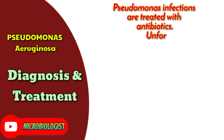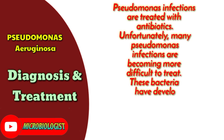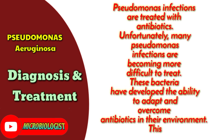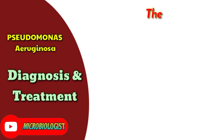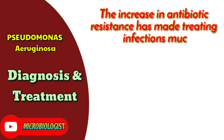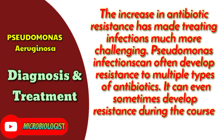How are Pseudomonas infections treated? Pseudomonas infections are treated with antibiotics. Unfortunately, many Pseudomonas infections are becoming more difficult to treat. These bacteria have developed the ability to adapt and overcome antibiotics in their environment — this is called antibiotic resistance. The increase in antibiotic resistance has made treating infections much more challenging. Pseudomonas infections can often develop resistance to multiple types of antibiotics, and can even develop resistance during the course of treatment.